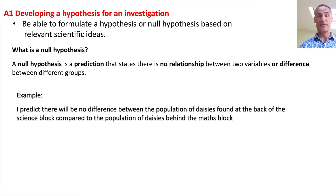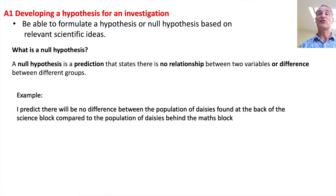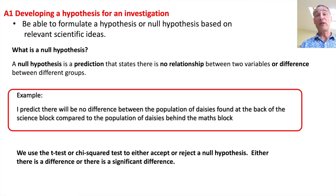So what's a null hypothesis? A null hypothesis is a prediction that states there is no relationship between two variables, or no difference between different groups, and what you have to do is try to prove that there is a difference by rejecting it. For example: 'I predict there will be no difference between the population of daisies found at the back of the science block compared with the population of daisies behind the maths block.' We would use t-tests or chi-squared tests to either accept or reject the hypothesis, to see whether there is actually a significant difference or not.